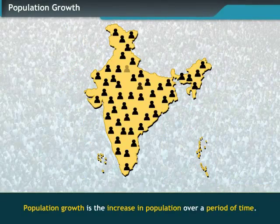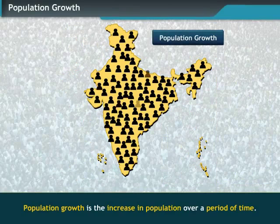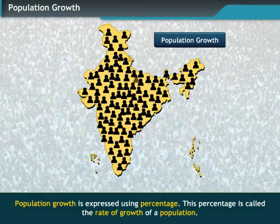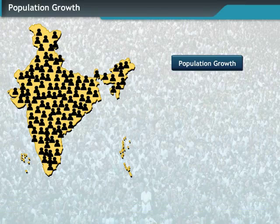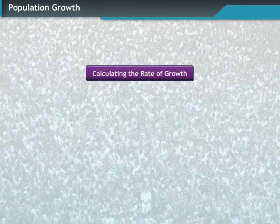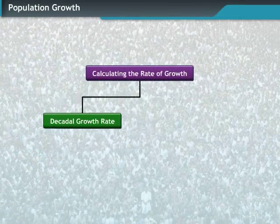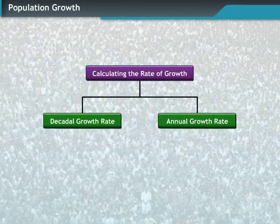The increase in population over a period of time is known as population growth. Population growth is expressed using percentage, and this percentage is called the rate of growth of a population. There are two ways to calculate rate of growth, namely decadal growth rate and annual growth rate.